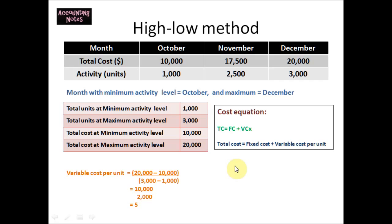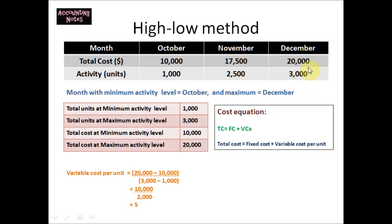The first step is to specify the month with the minimum activity level. Looking at units produced: October has 1,000, November has 2,500, and December has 3,000 units. So the minimum activity level occurred in October with 1,000 units, and the maximum activity level occurred in December with 3,000 units.